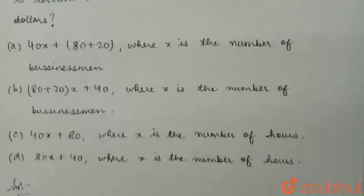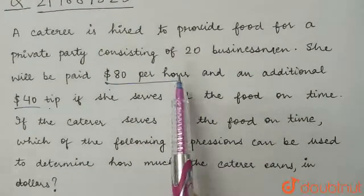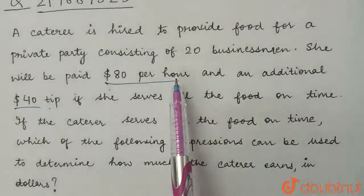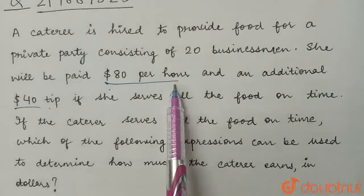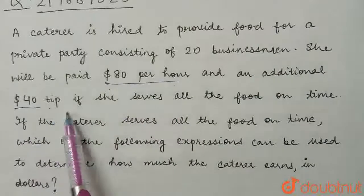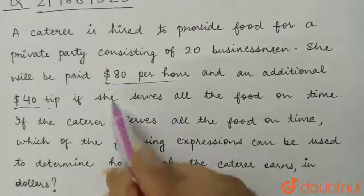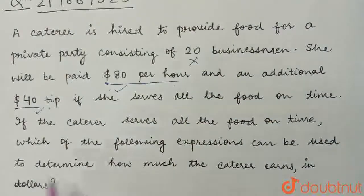Our solution: we are given that a party consists of 20 businessmen, but the caterer's earnings do not depend upon the number of people present in the party. Her earnings depend upon the number of hours she works and the tip she gets if she serves all the food on time. So her earnings depend on these two factors only, and not on the number of people in the party.